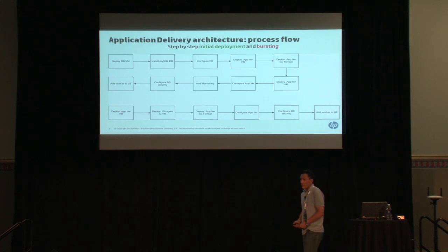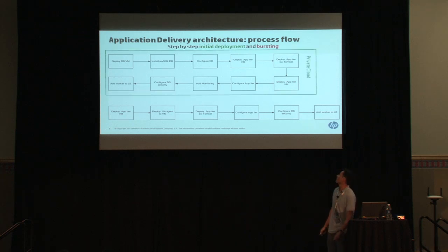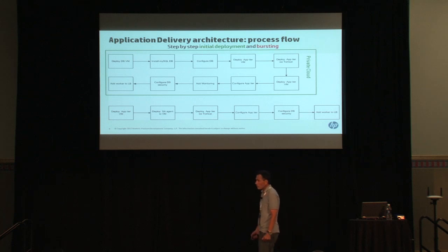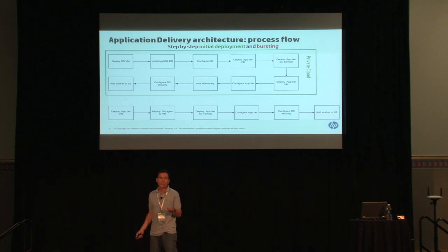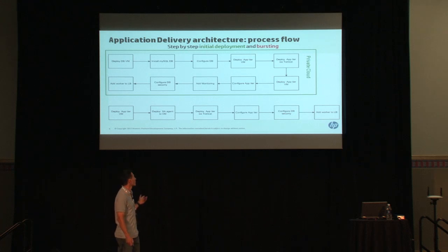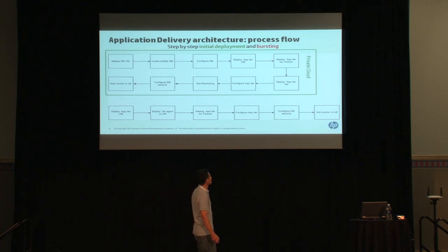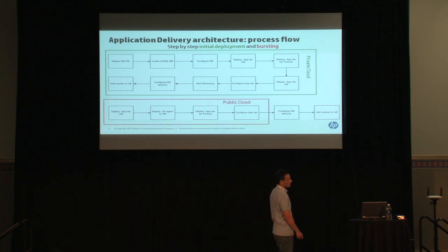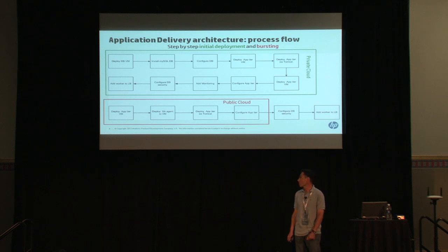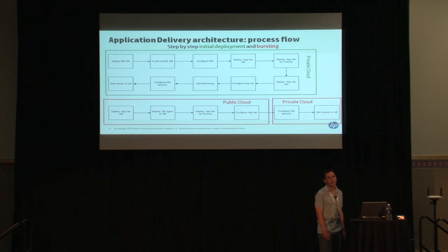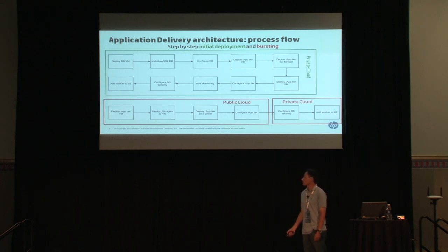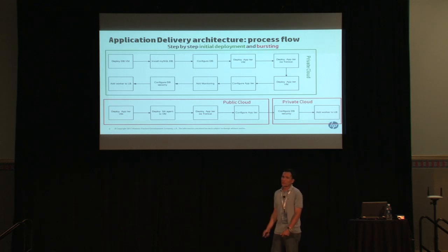Let's go over the steps — this is a simplified diagram — to deploy this application initially in a private cloud environment. It covers deploying the database tier, then the application tier, configuring security on each tier, deploying monitoring, adding to the load balancer, and then the bursting component, which involves deploying to the public cloud and configuring the database security and adding workers to the load balancer. There are many steps here, and while you could do everything with simple scripts, it's going to be a lot of work if you want to make it reusable.